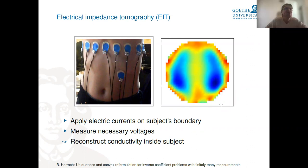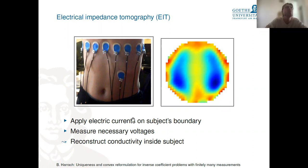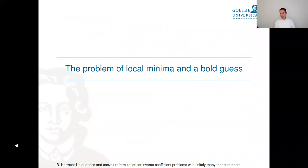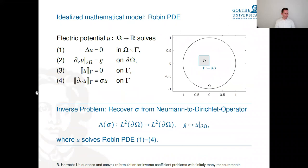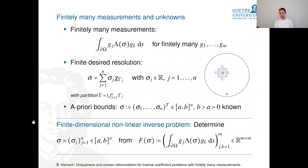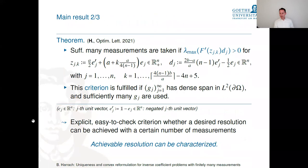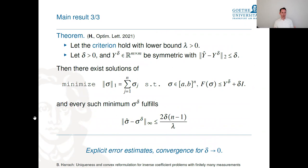Q: Can the robustness parameter λ be used to optimize the electrode parametrization for a given noise model? A: Yes, this is exactly what a PhD student is now implementing for an electrode model. Once λ can be computed, one can study how it varies with number of electrodes, their positions, and optimize electrode placement to maximize λ — a very natural direction.